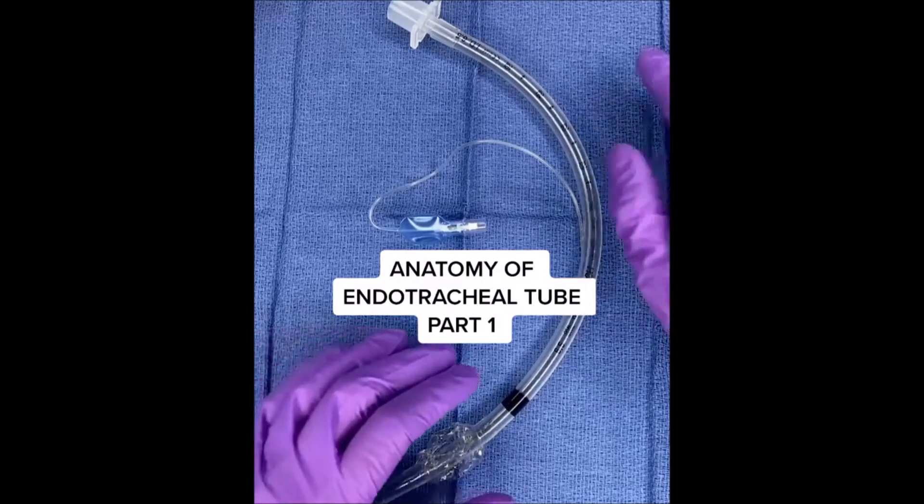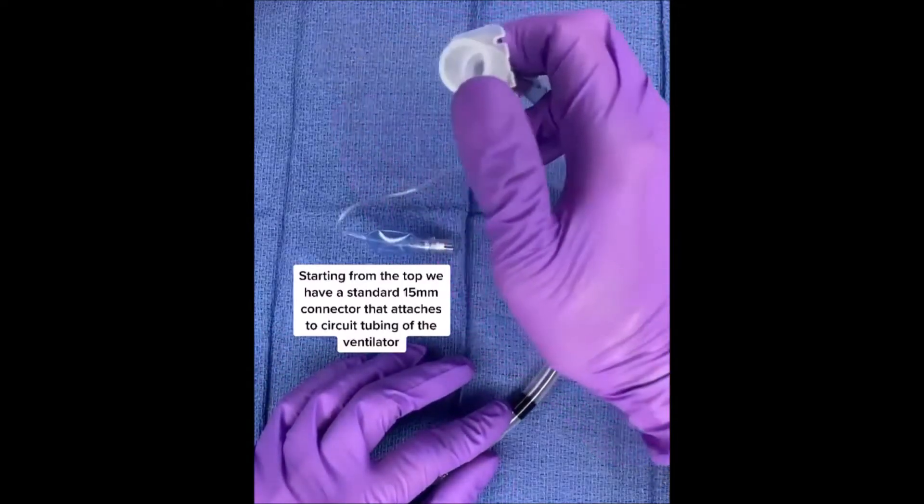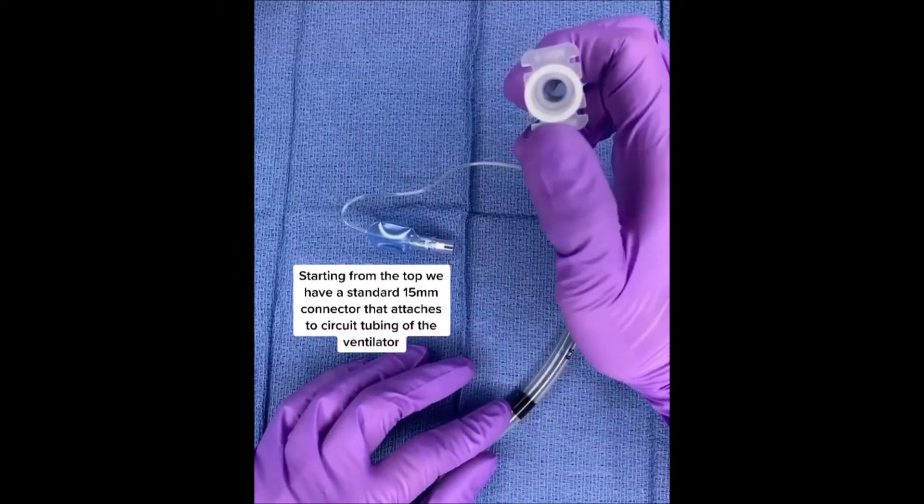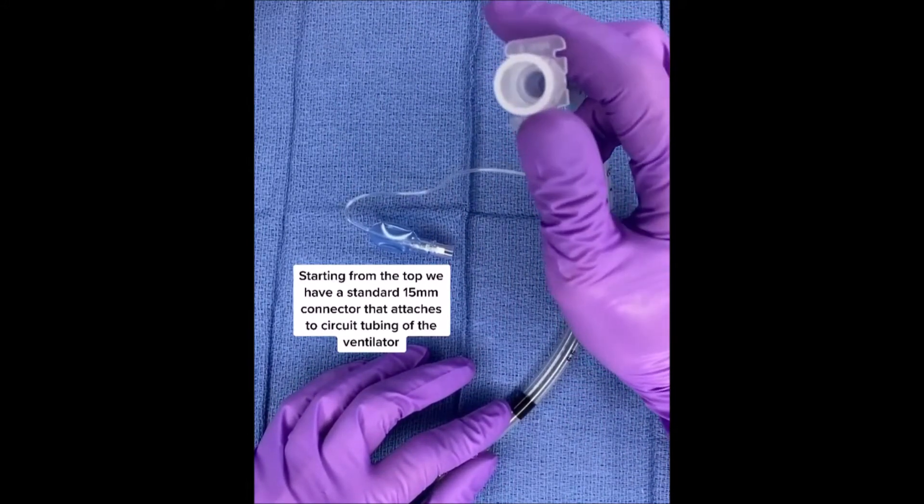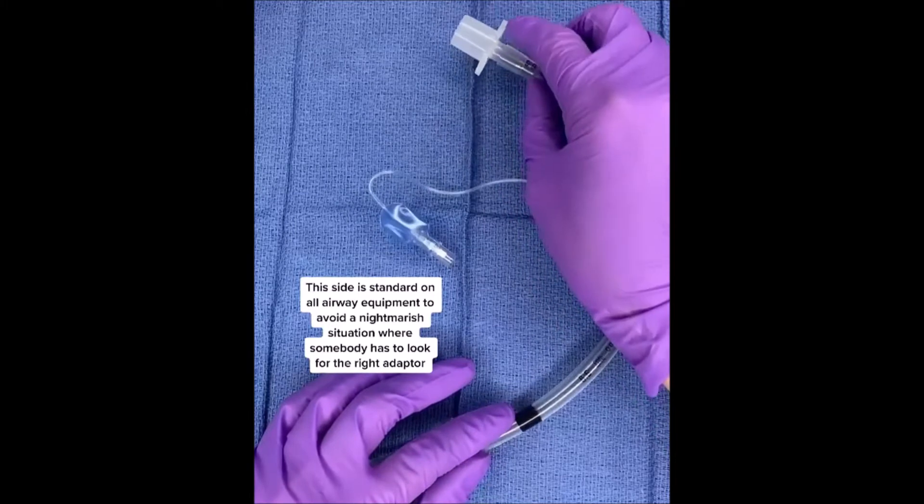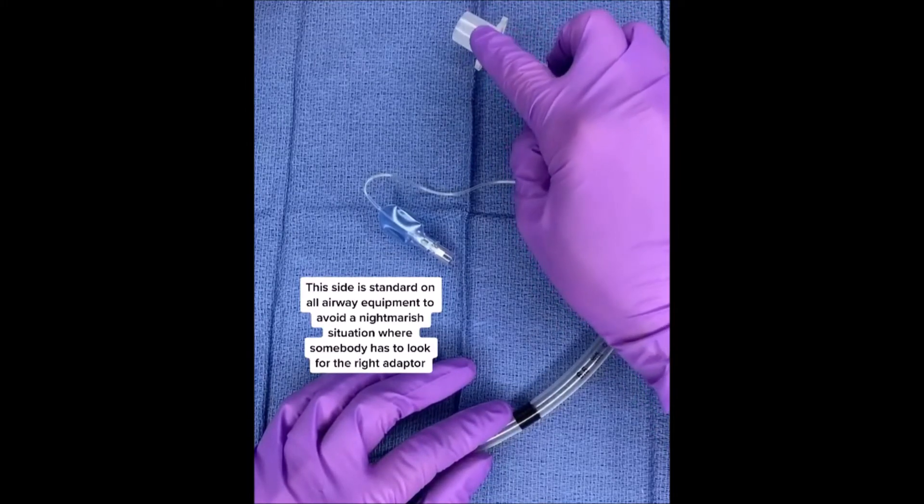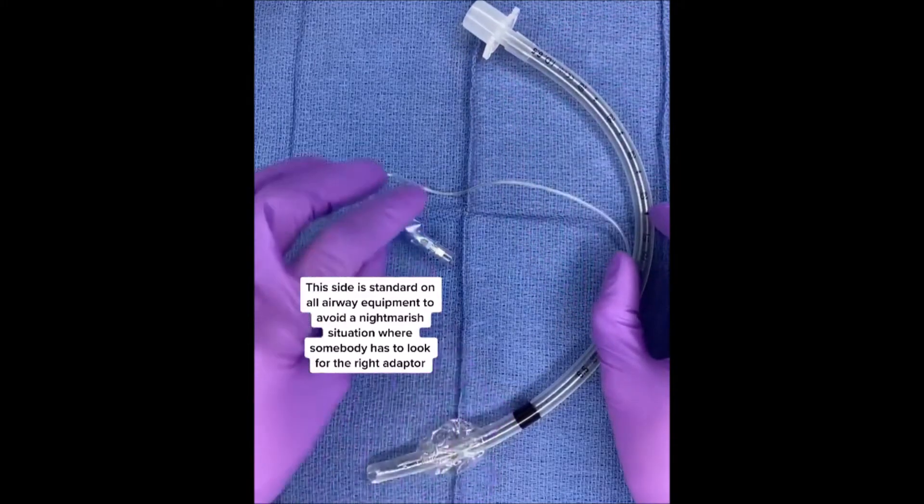Let's talk about the anatomy of the endotracheal tube. Starting from the top, we have a standard 15 millimeter connector that attaches to circuit tubing of the ventilator. This side is standard on all airway equipment to avoid a nightmarish situation where somebody has to look for the right adapter.